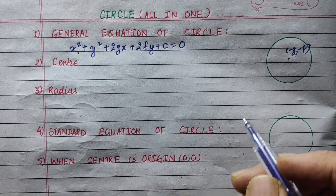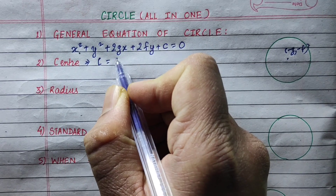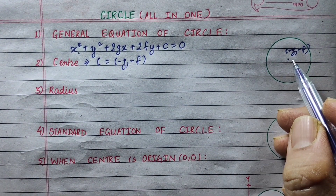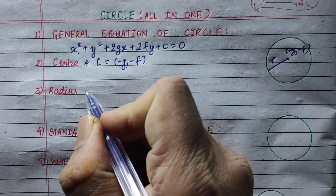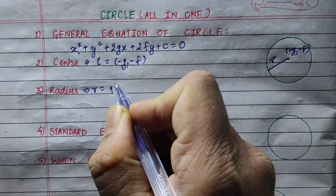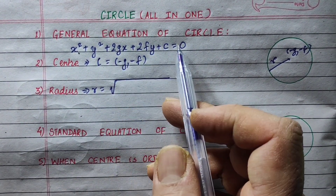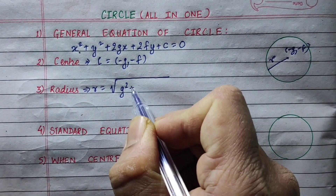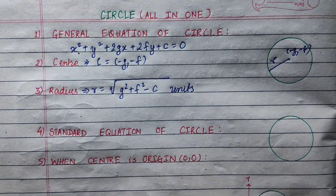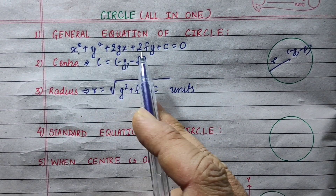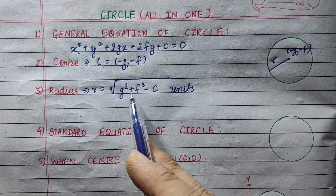So here we will take the center. If we compare it, the center is given as (minus g, minus f). The radius is the square root of g squared plus f squared minus c units. The general equation of the circle is x squared plus y squared plus 2gx plus 2fy plus c equals 0, with center (minus g, minus f) and radius equals square root of g squared plus f squared minus c units.